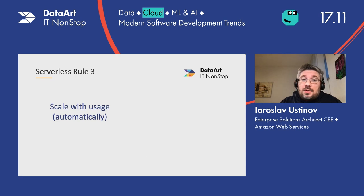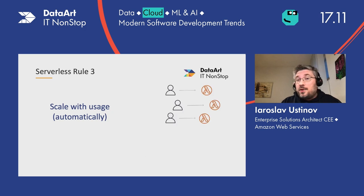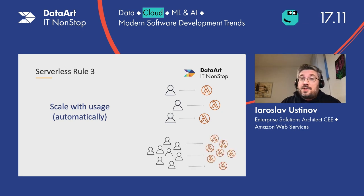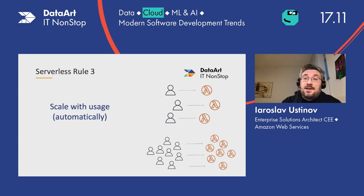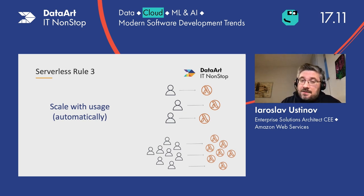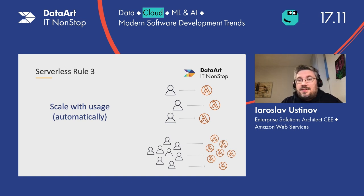The third rule is it scales with the usage, and that happens automatically. If you have few users, then you have few Lambda environments up and running handling your requests. If the number of users grows, Lambda will scale automatically in response. You have some power to configure limits on this scaling, but it's not like you need to administer the whole infrastructure or specific solutions like load balancing or auto scaling.